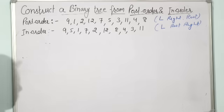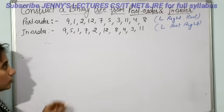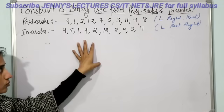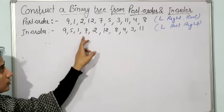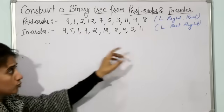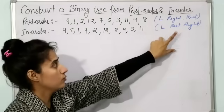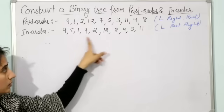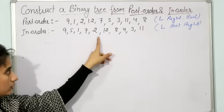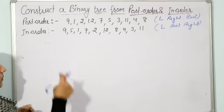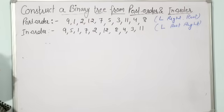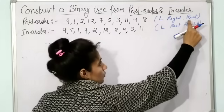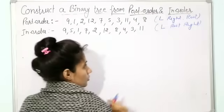The first step is to find out the root of the binary tree. From in-order traversal, you can't find out the root because root is in between left and right — we can't say what is the root. But from post-order, we can say which one is root, because the root is always in the last position.